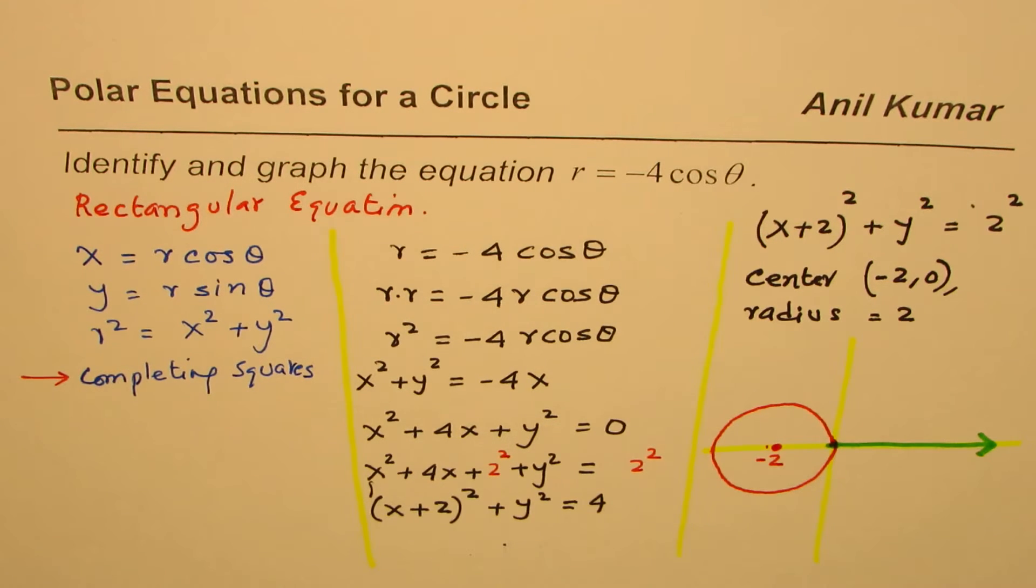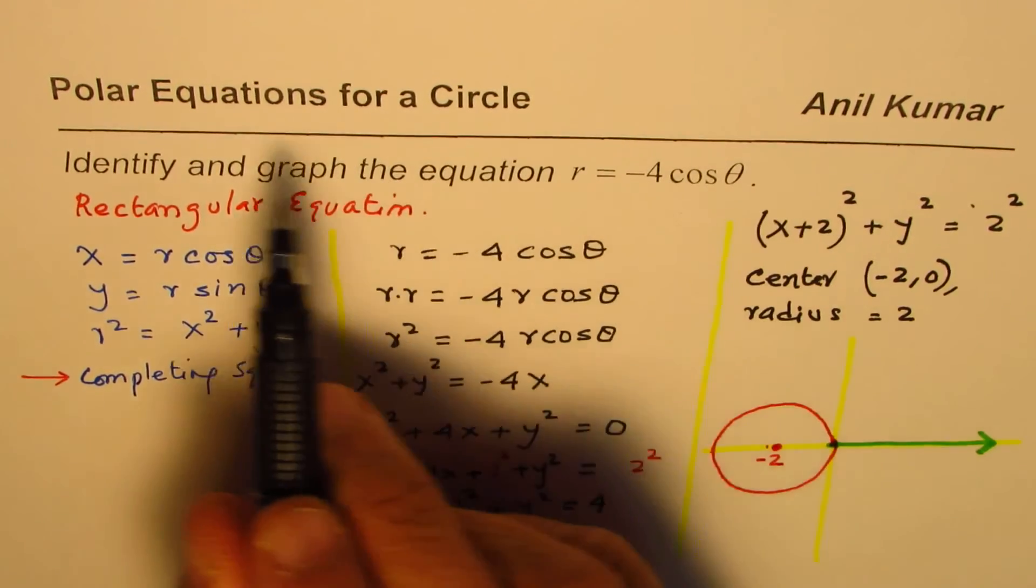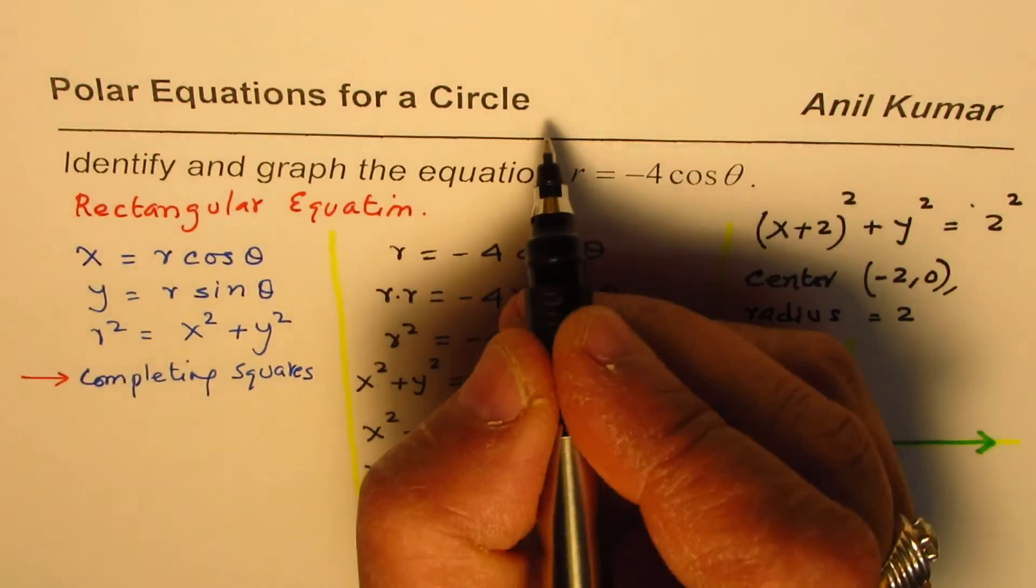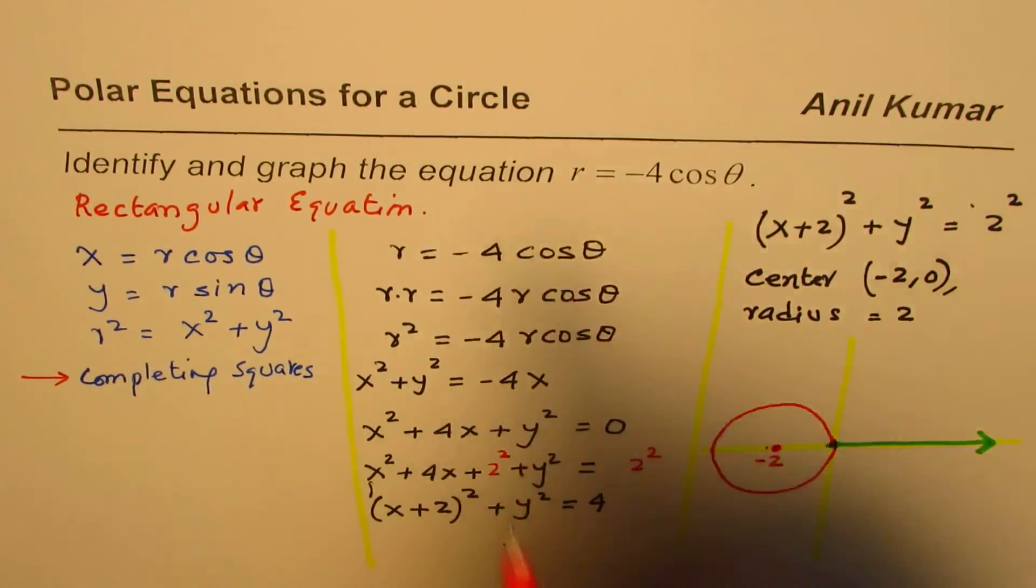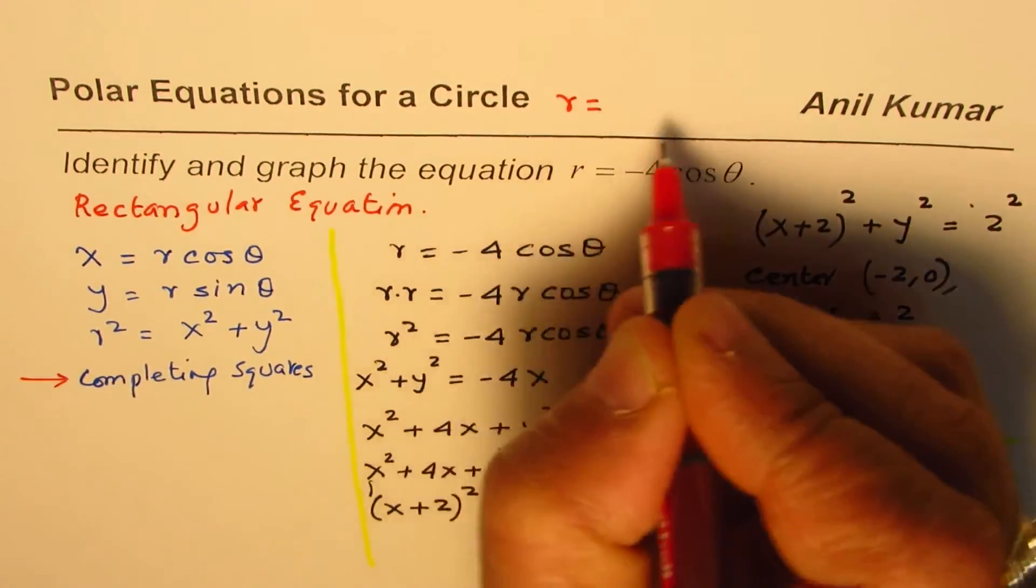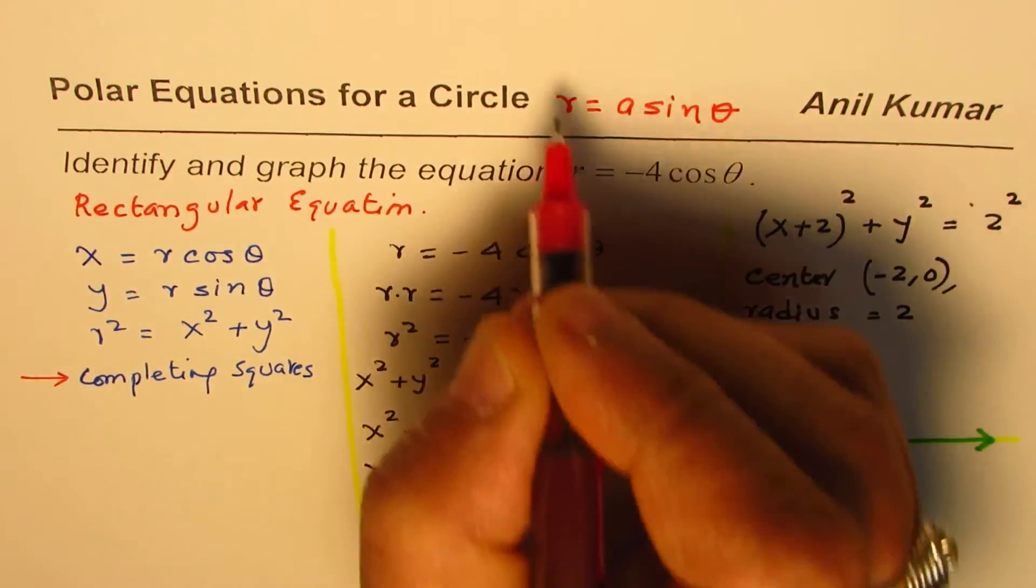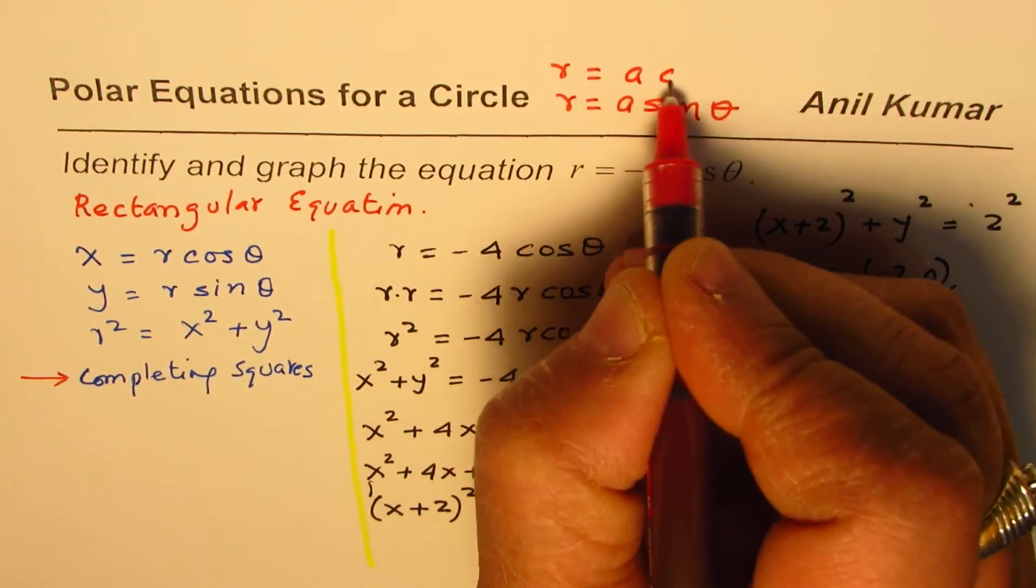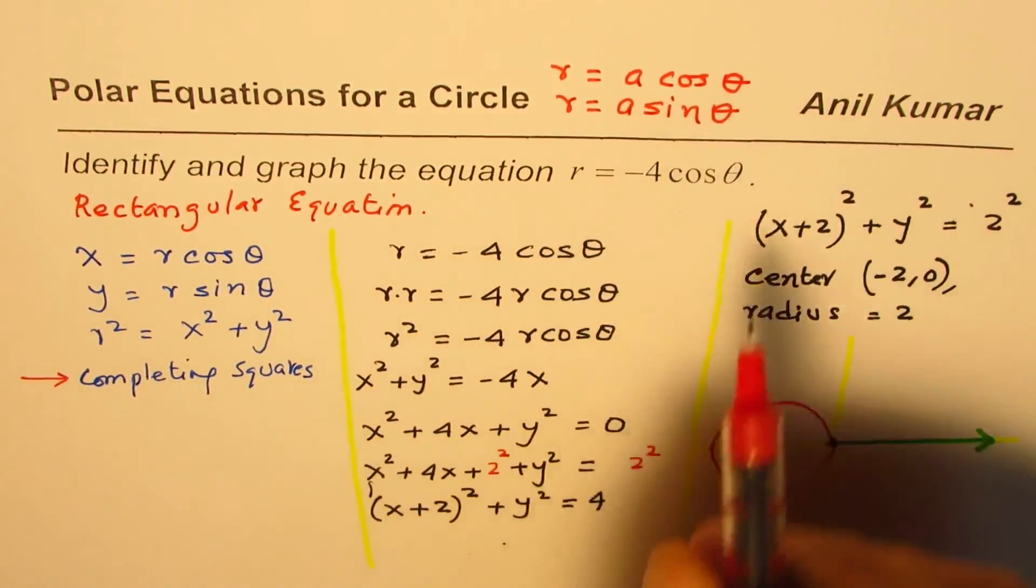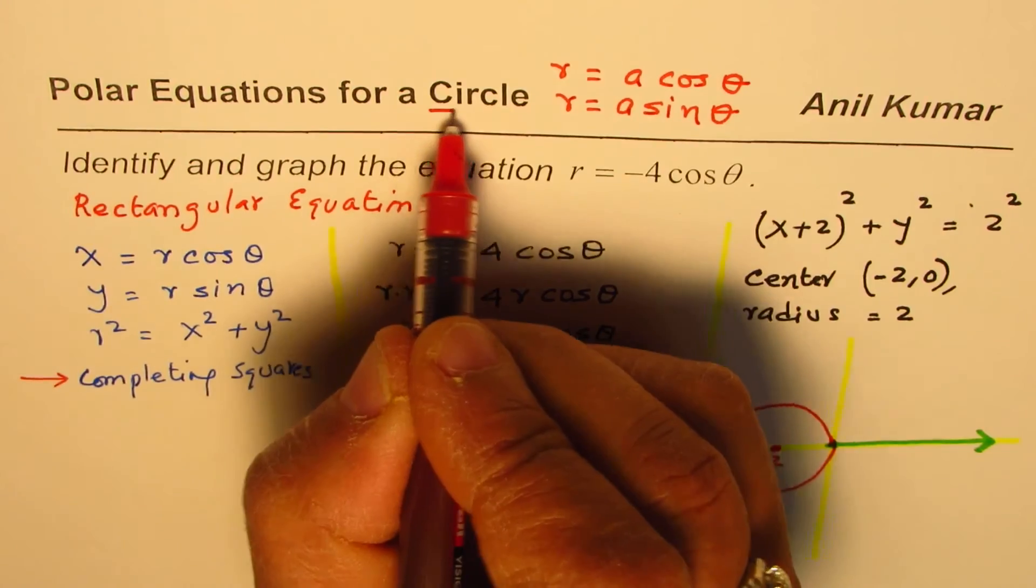So, that is what we learn from this particular video. So, in general, we can say that the polar equation in the form of, let me write here, r equals a sine theta or r equals a cosine theta will represent a circle.